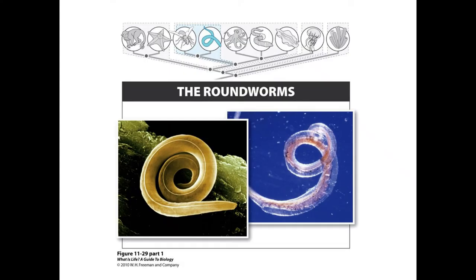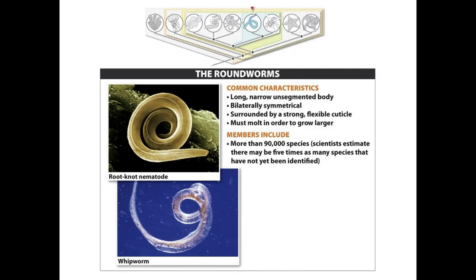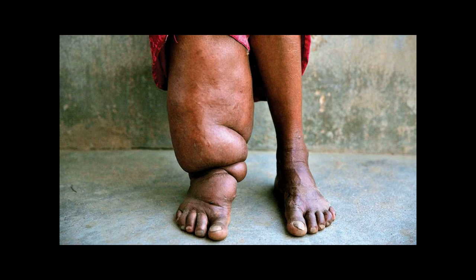The roundworms, like the flatworms and the segmented worms, are protostomes with defined tissues. But roundworms grow by molting. Most roundworms reproduce sexually, and some species can produce more than 200,000 eggs per day. Estimates suggest that roundworms are the most abundant animals on Earth. Some soil-dwelling roundworms, called nematodes, live in the roots of plants, causing damage or even death of the plant. About 15,000 species of roundworms are parasites of vertebrate animals, and roundworms are responsible for a large number of human diseases. One of these is elephantiasis, in which tiny roundworms transmitted by mosquito bites block the lymph ducts so that fluid accumulates in the limbs or scrotum, causing severe swelling. These parasitic roundworms occur in India, Africa, South Asia, and tropical America.